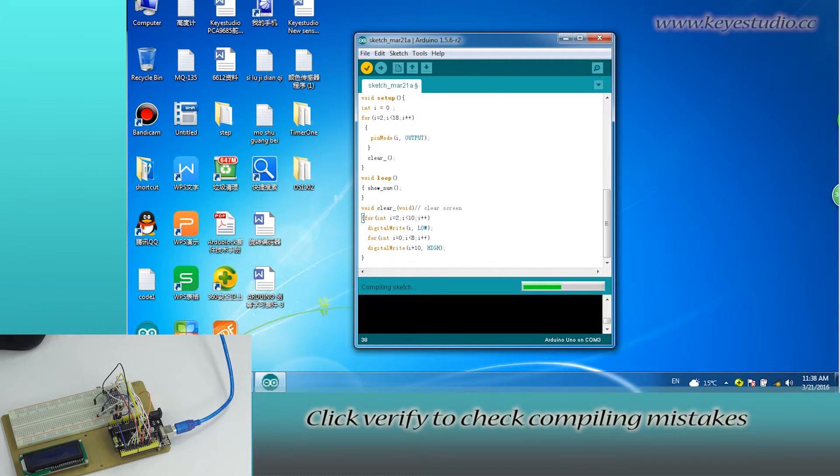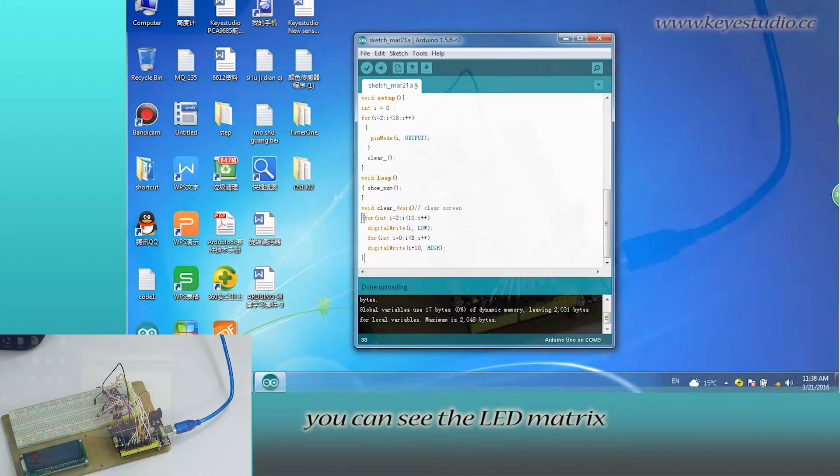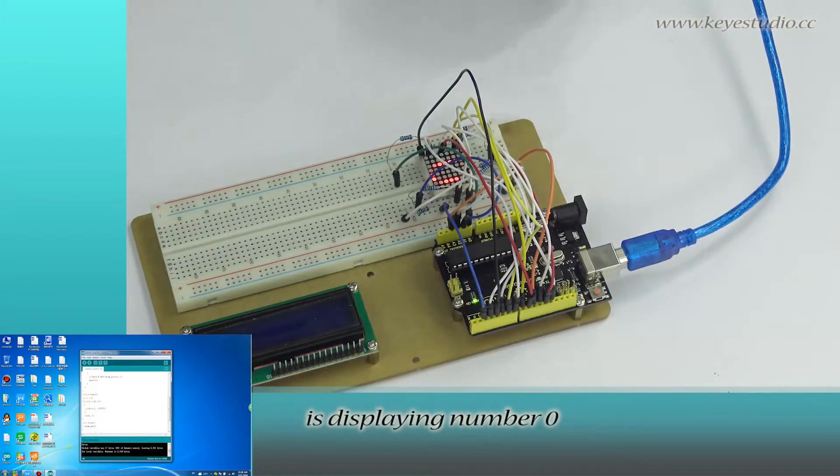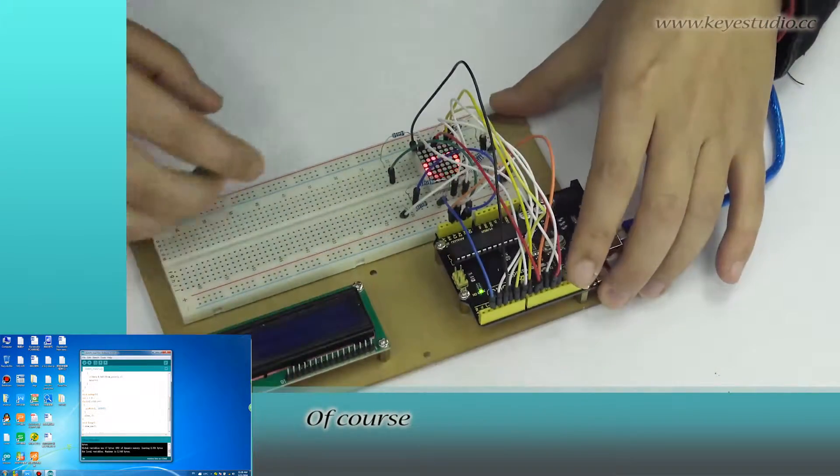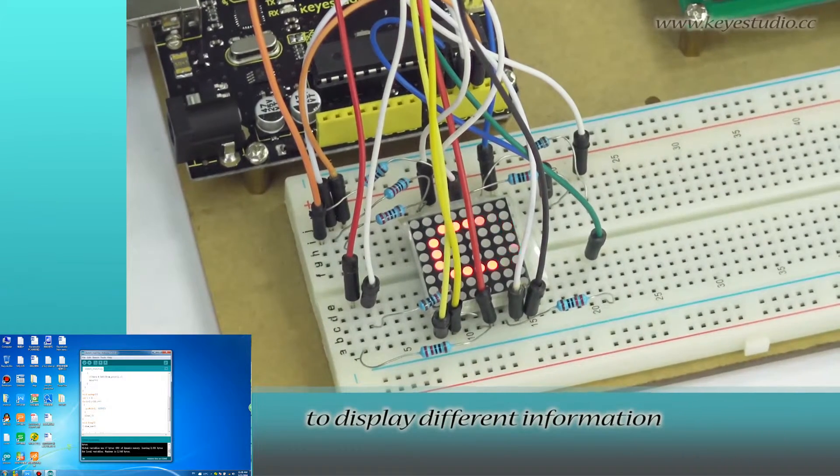Click verify to check for compiling mistakes. If codes are correct, click upload to upload the program to the board. After uploading is done, you can see the LED matrix displays number 0. Of course, you can change the code for it to display different information.